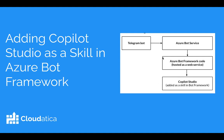At a high level, you could have a scenario like what I show in the picture. You might want to publish your bot to Telegram, and CoPilot Studio doesn't have that built-in capability. So you might want to build an Azure Bot Framework bot, but also take advantage of CoPilot Studio's low-code, no-code ability, and add that as a skill and register that as an Azure Bot service, and then let the Telegram bot talk to you. For those kinds of scenarios, this tutorial will be helpful.